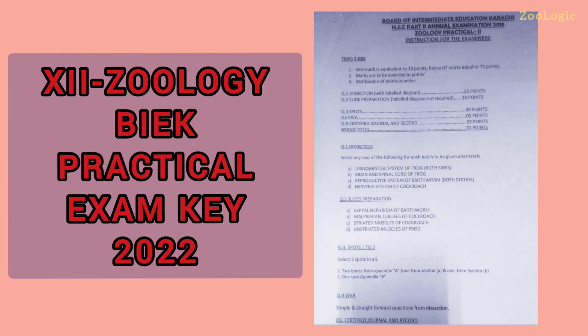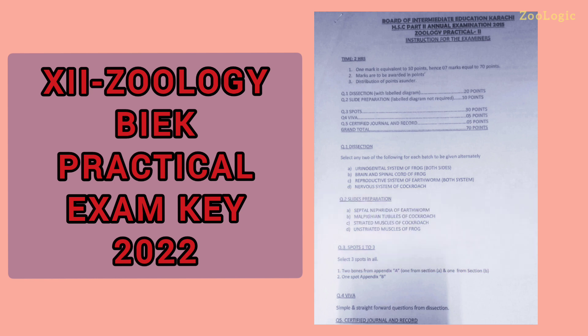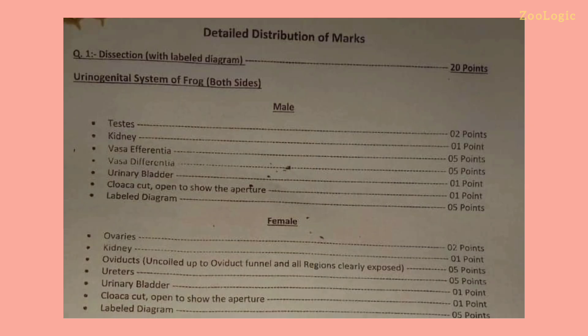These seven marks are given in the form of points: one mark equals ten points, so seven marks equal seventy points altogether. There are five questions; from these five questions you have to attempt the first three in your examination copy, as question number four is the viva and question number five is your certified journal.